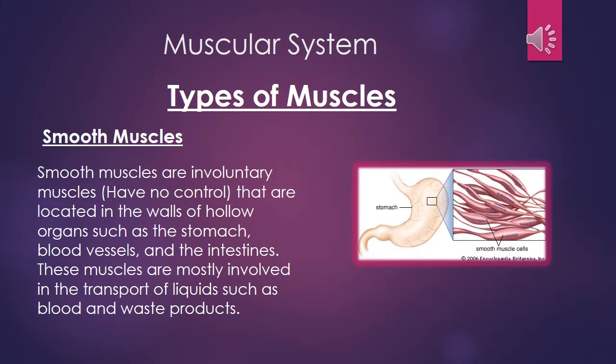The first type of muscle is smooth muscle. Smooth muscles are involuntary muscles, which means we have no control of them, and are located in the walls of hollow organs such as the stomach, blood vessels, and the intestines.